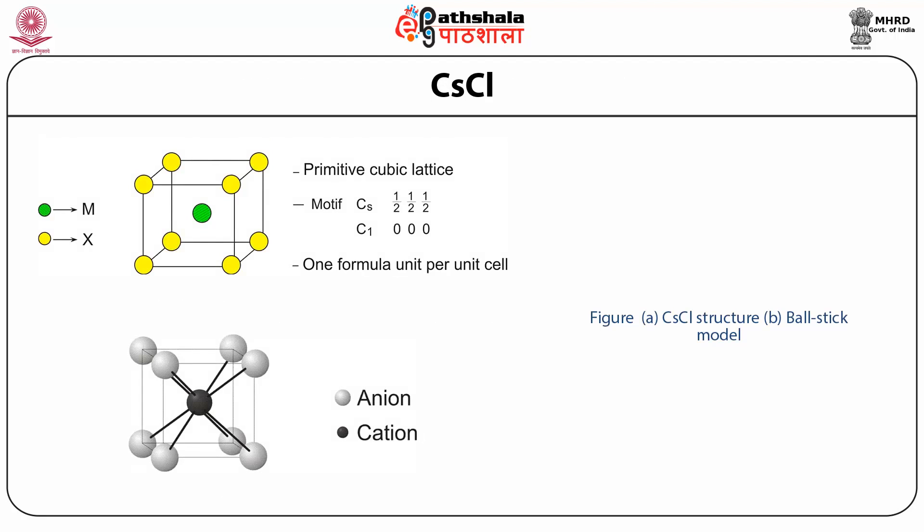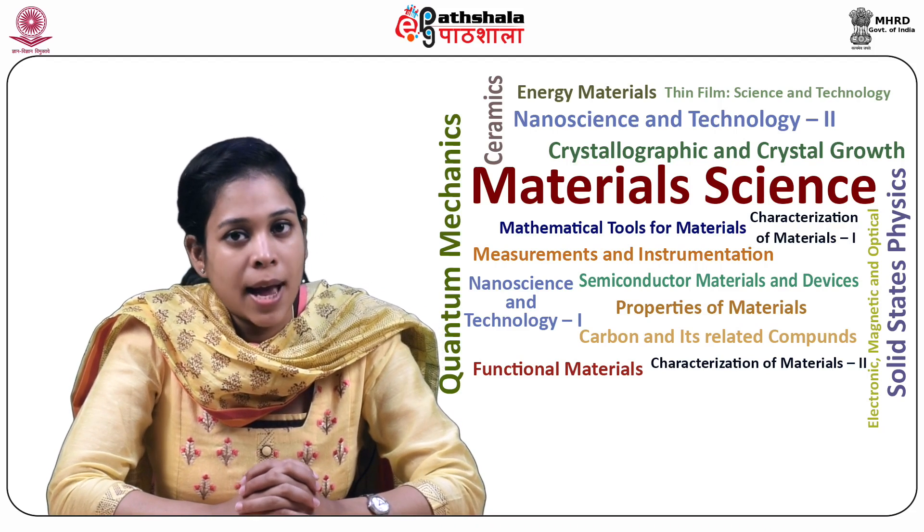Now let us analyze the structure of caesium chloride. As discussed, it is an MX type compound, so there are only two types of atoms: M and X. Here M atoms are represented by green color and occupy the center position, whereas X atoms are represented by yellow and occupy the corners of the unit cell. So the motif for M type atoms is (½,½,½) and for X type atoms it is (0,0,0) — one formula unit per unit cell. The ball-and-stick model also shows two types of atoms: the cation placed at the center and anions placed at the corners.